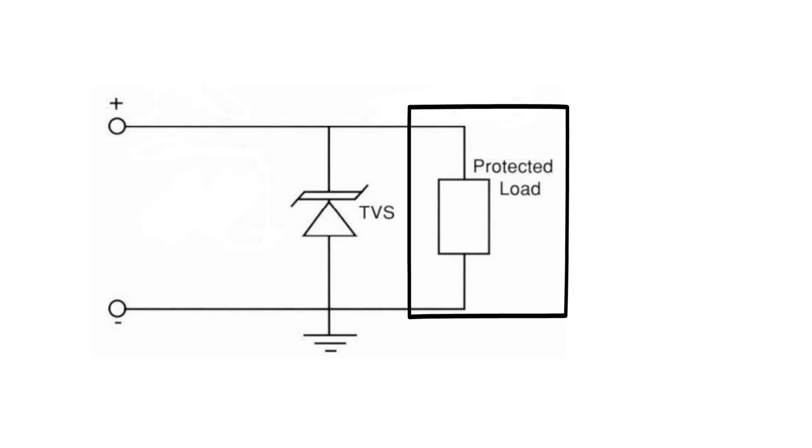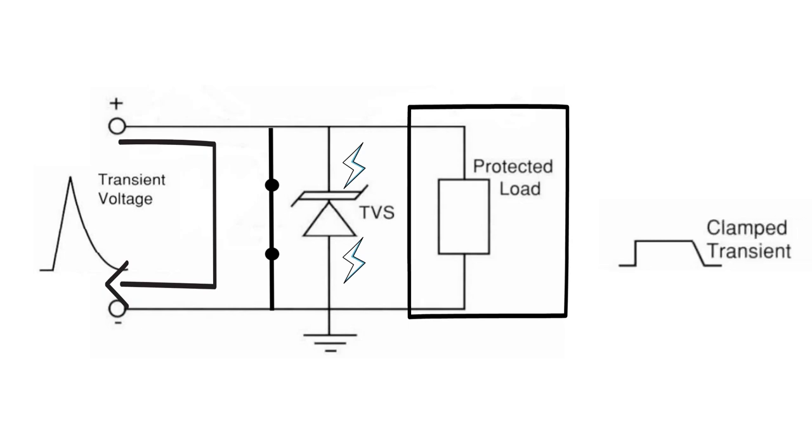When the circuit operates in the normal condition, then TVS diode acts as an open circuit having very high impedance across it, although a small leakage current is present there. When a transient state occurs, then the TVS diode acts as a short circuit and the transient current flows through the diode and voltage across the component, which needs to be protected, gets a clamping voltage provided by the TVS diode.